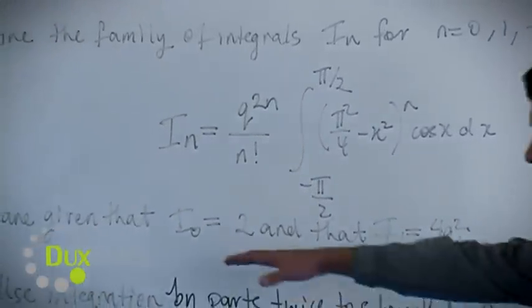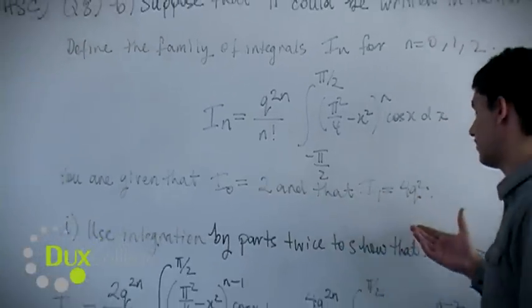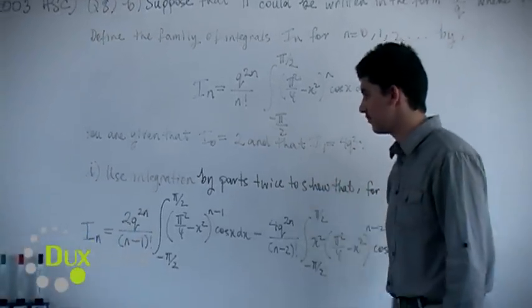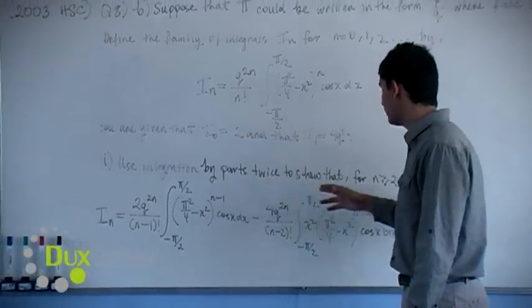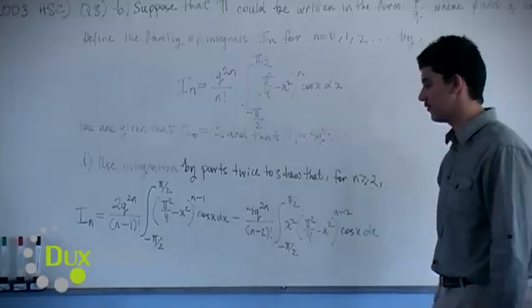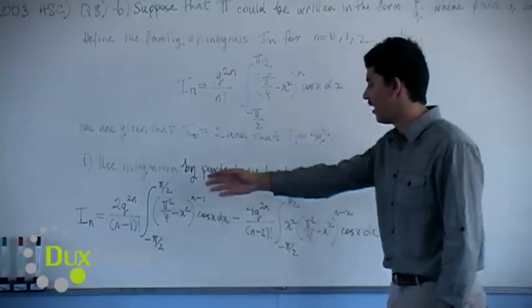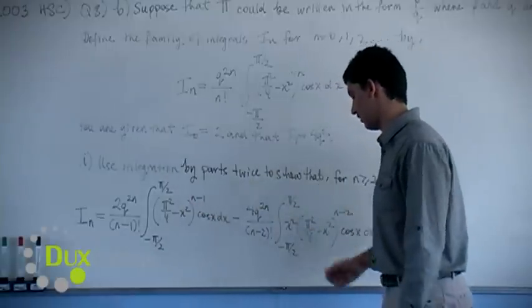You are given that i of 0 equals 2 and that i of 1 equals 4q squared. These form the base cases. Use integration by parts twice to show that for n greater than or equal to 2, of course n is an integer, i of n equals this expression here.